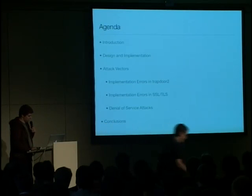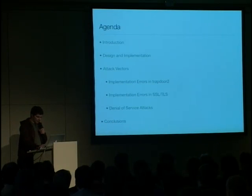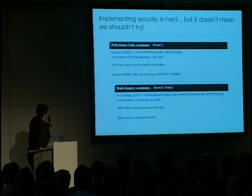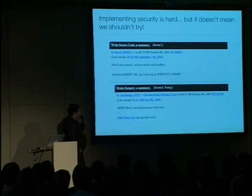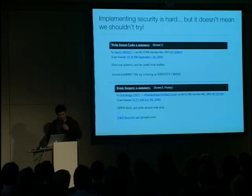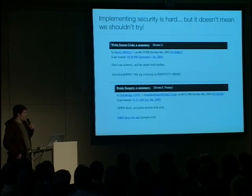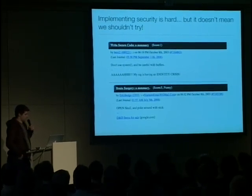As an introduction, a very simplifying view on writing secure code — 'Write secure code: a summary: don't use system and be careful with buffers.' And then an answer on Slashdot: 'Brain surgery summary: open skull and poke around with stick.' So a more sophisticated view on security issues is definitely required, and this summary doesn't even scratch the surface.